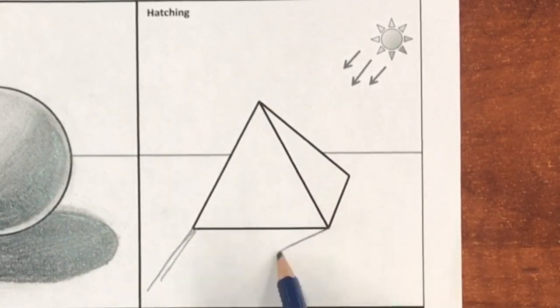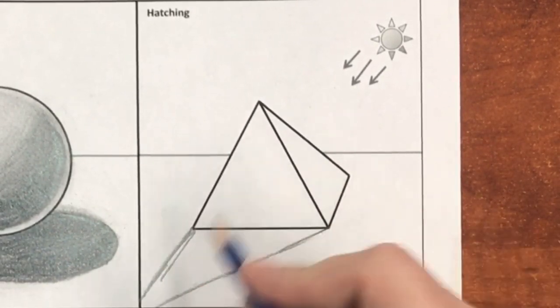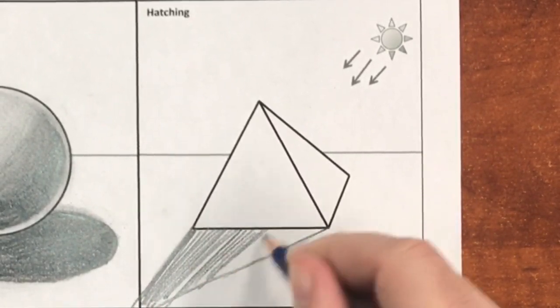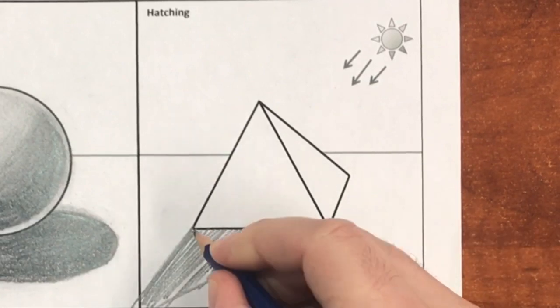In our next form, the pyramid, we're going to be using the hatching technique. Pay close attention to the direction the light is coming from and make sure that the shadows fall in the opposite direction.